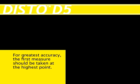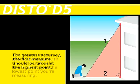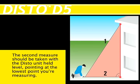For greatest accuracy, the first measurement should be taken at the highest point, and the second measurement should be taken with the Disto unit held level, pointing at the lowest point you're measuring.